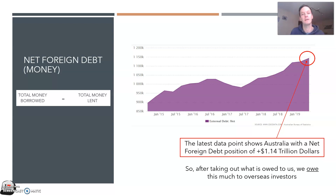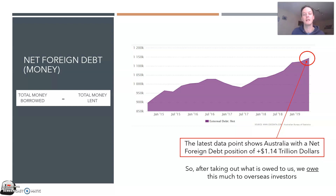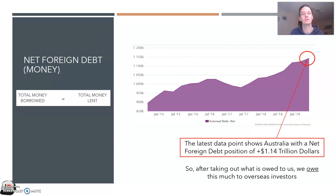Other countries that are net lenders, like Japan or Germany, will have a net foreign debt number that is negative because they lend out more money than they borrow. Countries with a negative net foreign debt position generally achieved that through a current account surplus, using that money to lend out — recorded as a debit on the capital and financial account. Australia, by contrast, has a very large $1.14 trillion international debt, which only includes overseas borrowing and lending, not within Australia's borders.